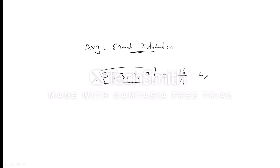Now to illustrate equal distribution, consider three friends in a class, each having three chocolates. If I ask the average number of chocolates, the answer is 3, because everyone has equal chocolates. Adding 3 plus 3 plus 3 equals 9, divided by 3 equals 3. Everyone has 3 chocolates — equal distribution — so the average is 3.